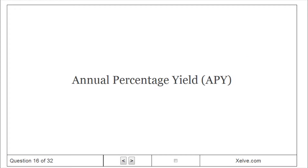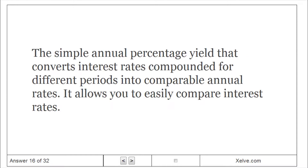Annual Percentage Yield. The simple annual percentage yield that converts interest rates compounded for different periods into comparable annual rates; it allows you to easily compare interest rates.